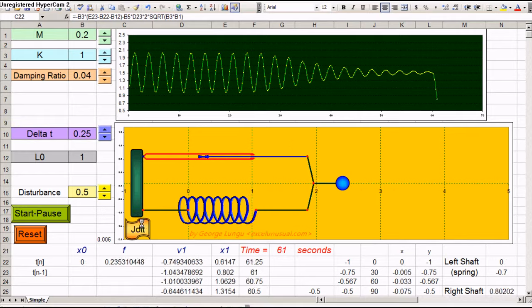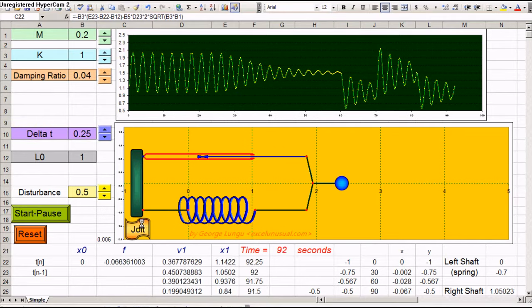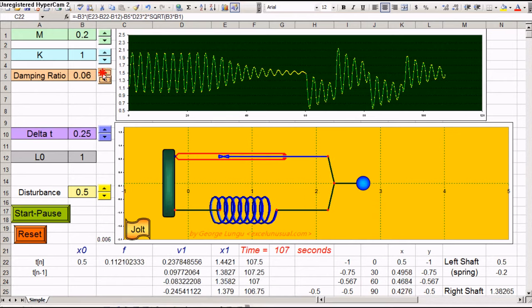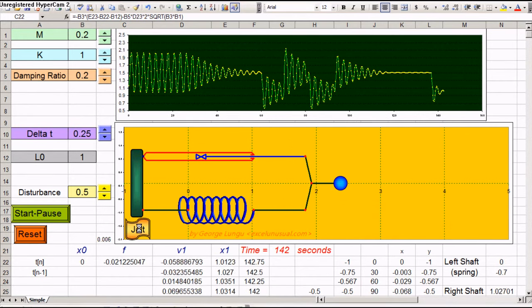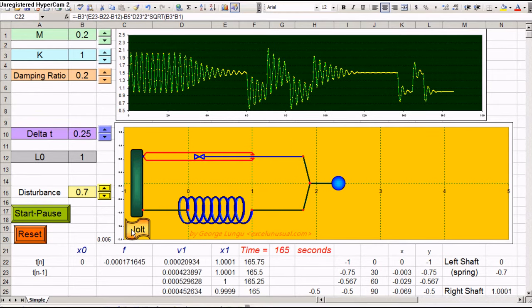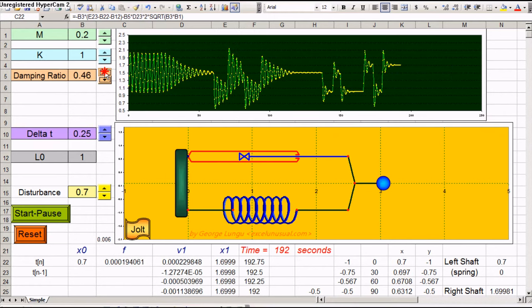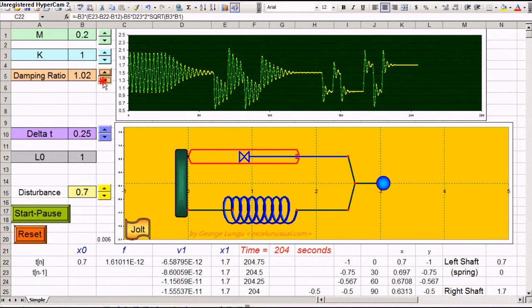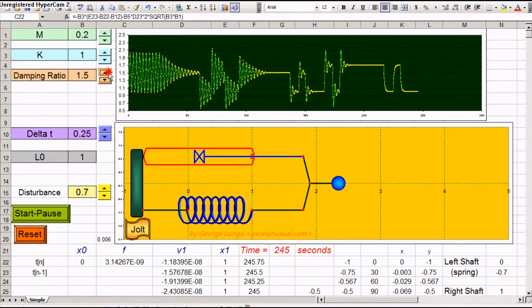We can see the oscillation dies out. If we increase the damping even more, 0.3, the oscillation will die out faster. We increase it to 1, critical regime. We have no oscillation. We can increase it even more.